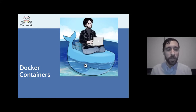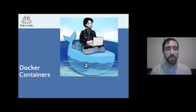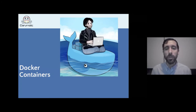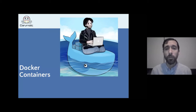In 2013, Solomon Hykes gave a five-minute talk at PyCon about the future of Linux containers. He cleverly combined namespaces and cgroups to make Docker containers easy to use, allowing people to isolate an application's configuration and run it on any other machine. We no longer need virtual machines — we can run many containers on a single machine because they are lightweight and very fast.